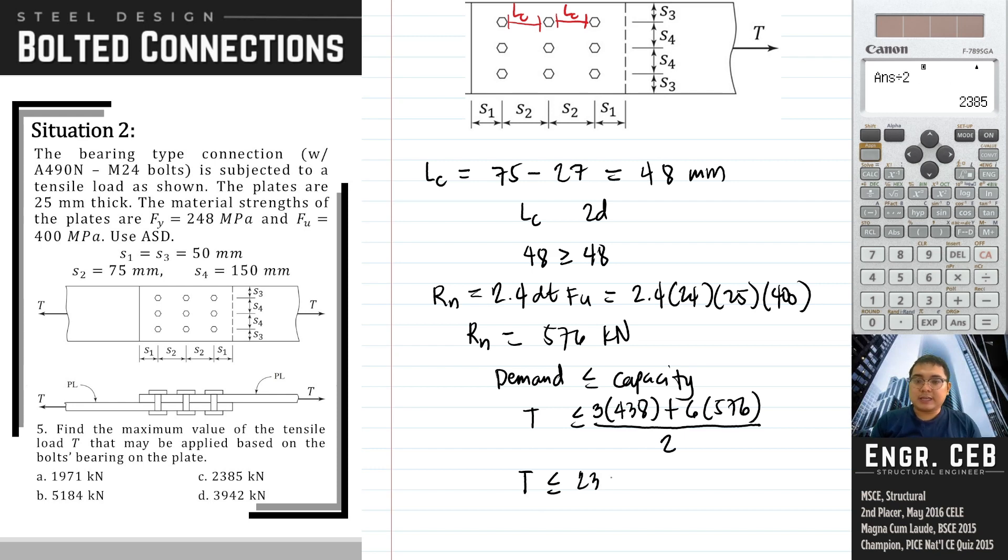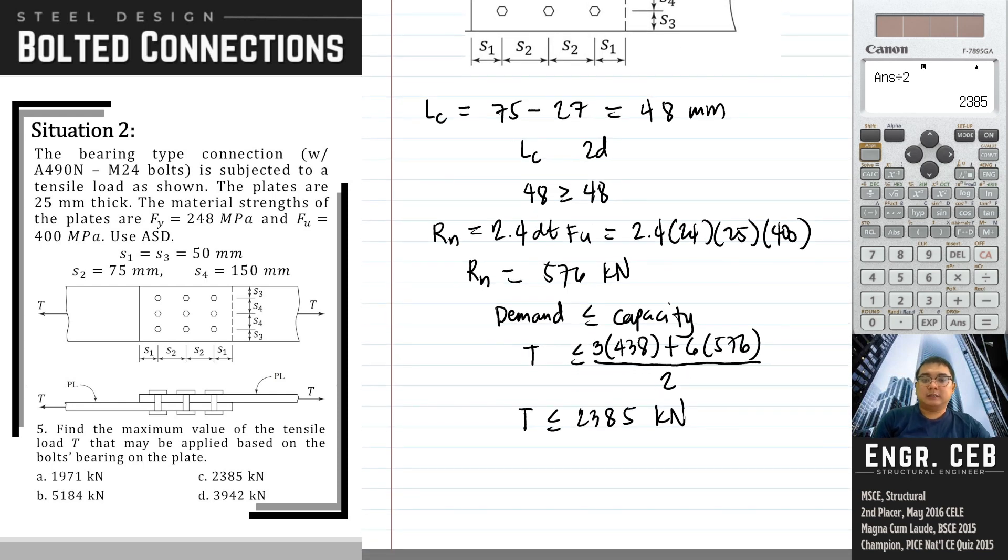Therefore, we have 2385 kN. This is the maximum value of T that can be applied without failure of bearing on the plate, and that is letter C.